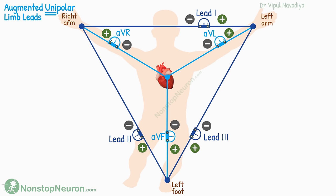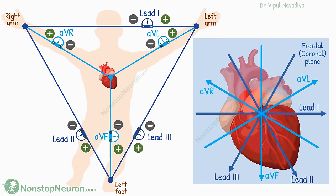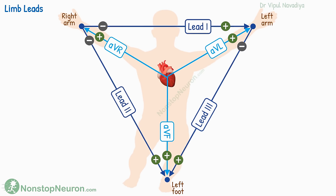Collectively, the standard bipolar limb leads and augmented unipolar limb leads define axes at every 30-degree interval in the frontal plane. We have three standard bipolar limb leads along each edge of the triangle, and three augmented unipolar limb leads connecting an electric reference point at the middle of the heart to each corner of the triangle.